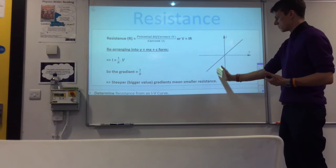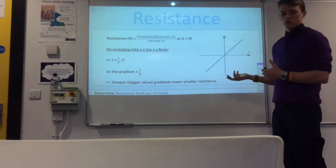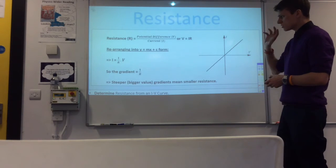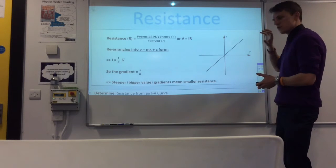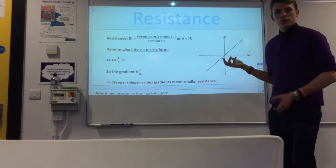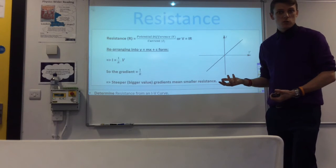What that means is a steeper or a larger gradient is indicating a lower resistance on these graphs. So if you see a gradient which is steeper, so something like this, that would mean the resistance was lower, which is a useful thing to have a look at. So that's generally what resistance is. So what we're going to take a look at now is a few characteristic graphs of different components. So if we plot a graph of something we don't know, we can work out what it is.